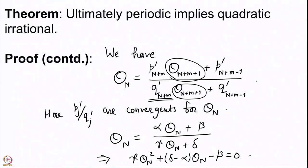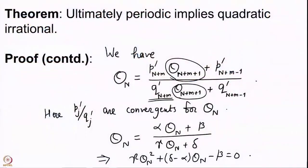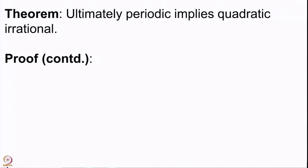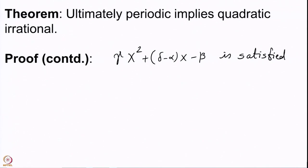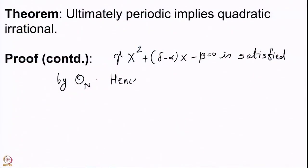Our θ_N, which is a complete quotient for θ, satisfies the quadratic equation γx² + (δ − α)x − β = 0. Since the continued fraction expansion does not terminate, θ_N is an irrational number satisfying a quadratic equation. Hence θ_N is a quadratic irrational.